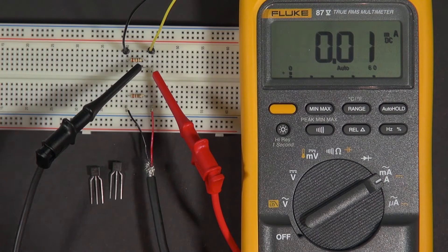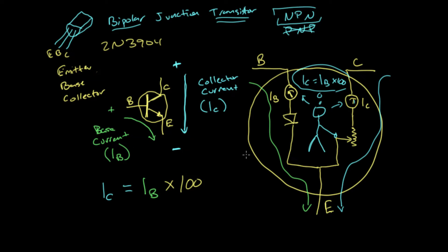So 0.3 milliamps. You can imagine I could send 0.3 milliamps from my base to my emitter, then this little guy inside the transistor is going to say, 'Oh, 0.3 milliamps, I want to multiply that by 100.'